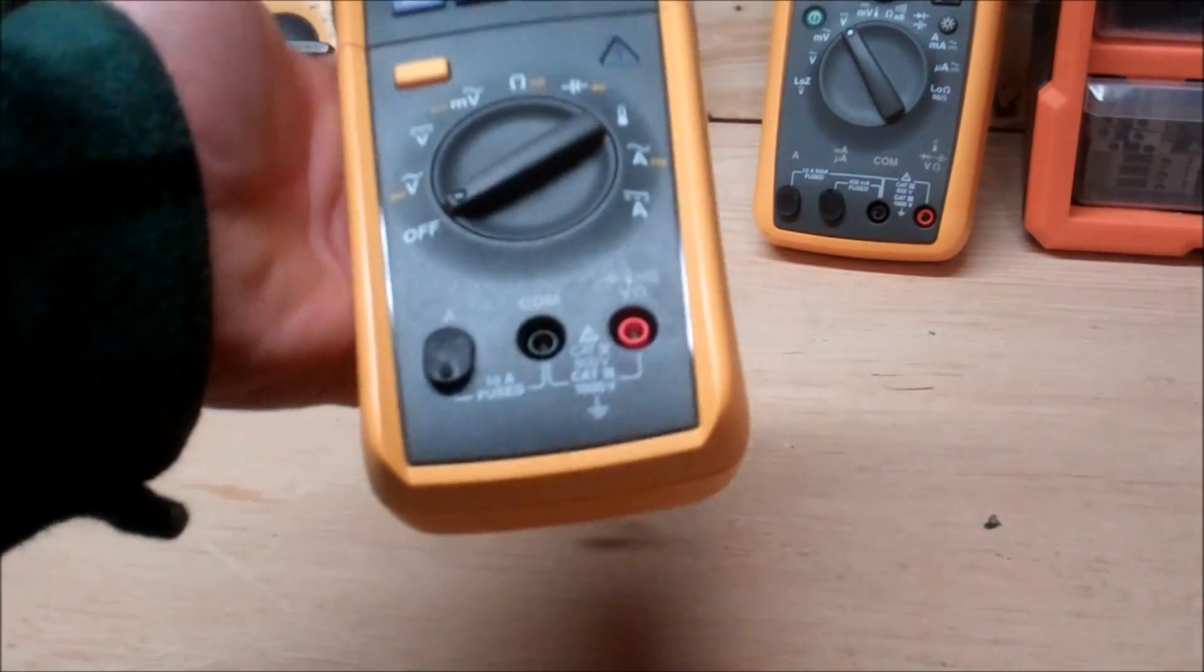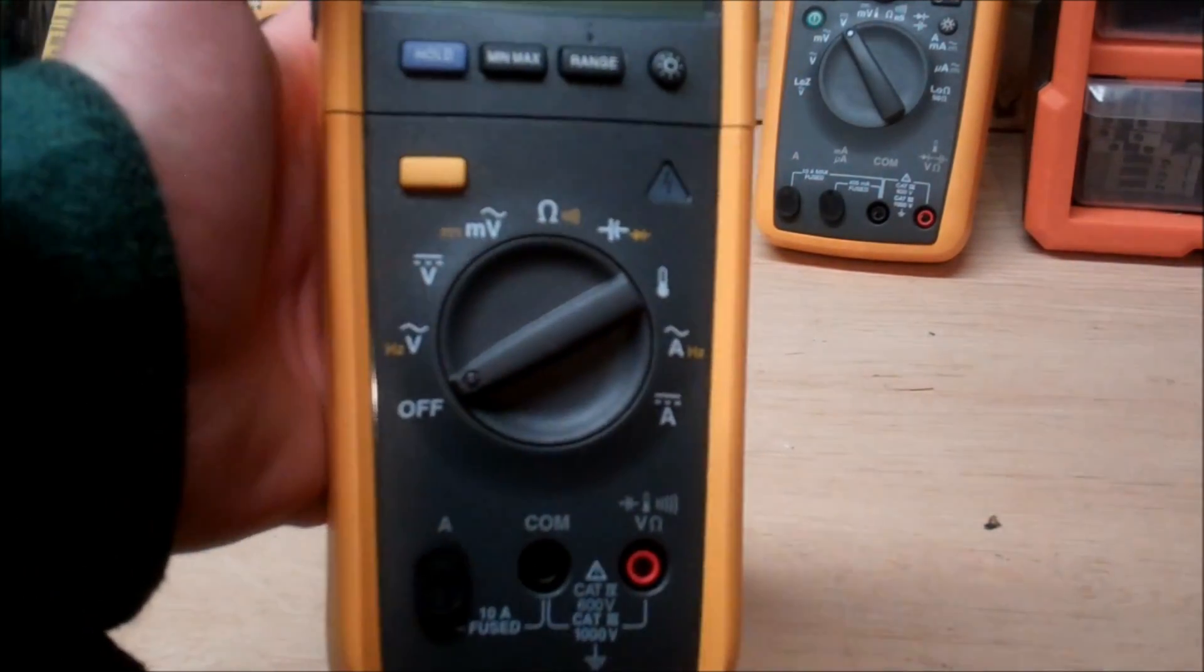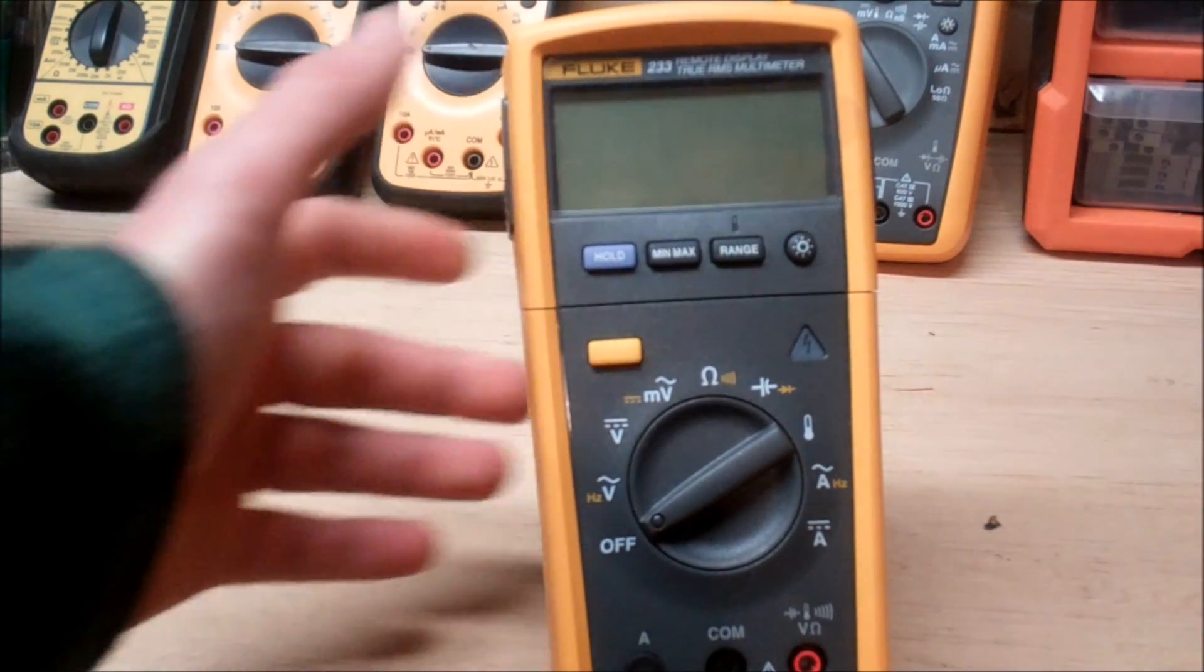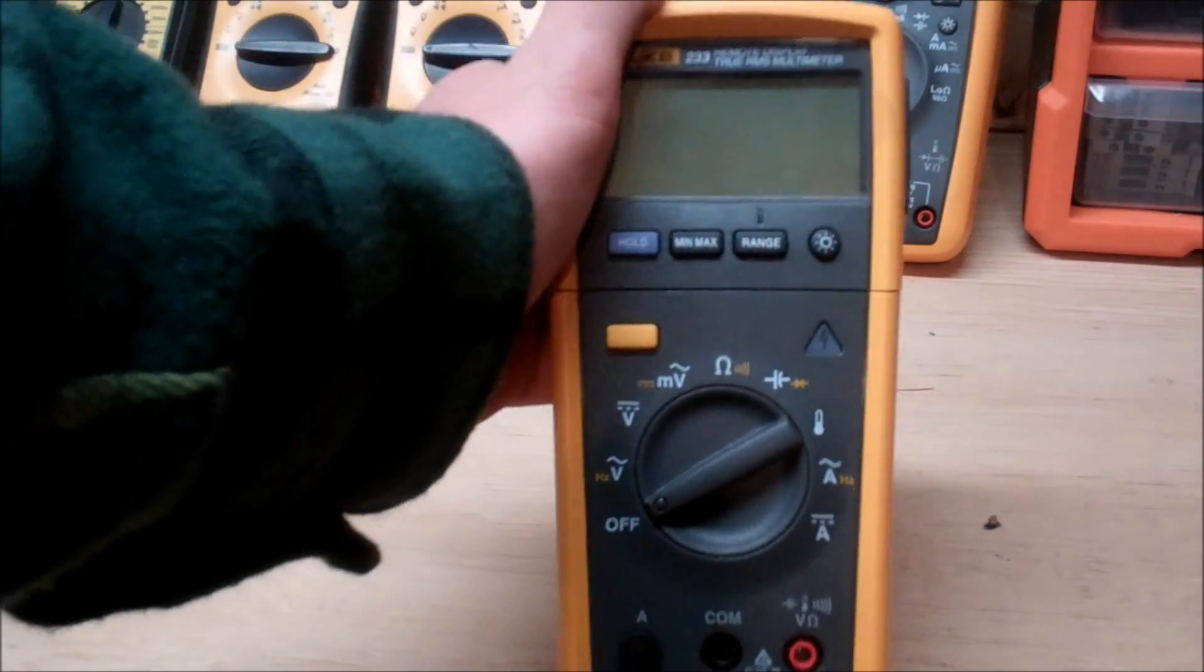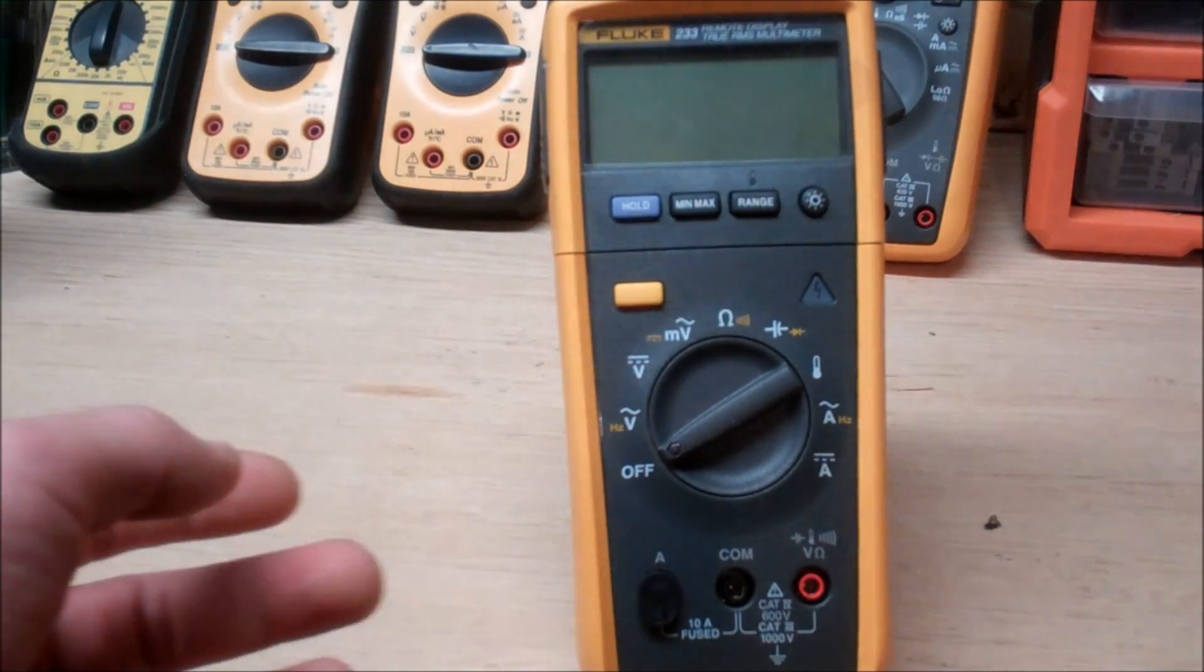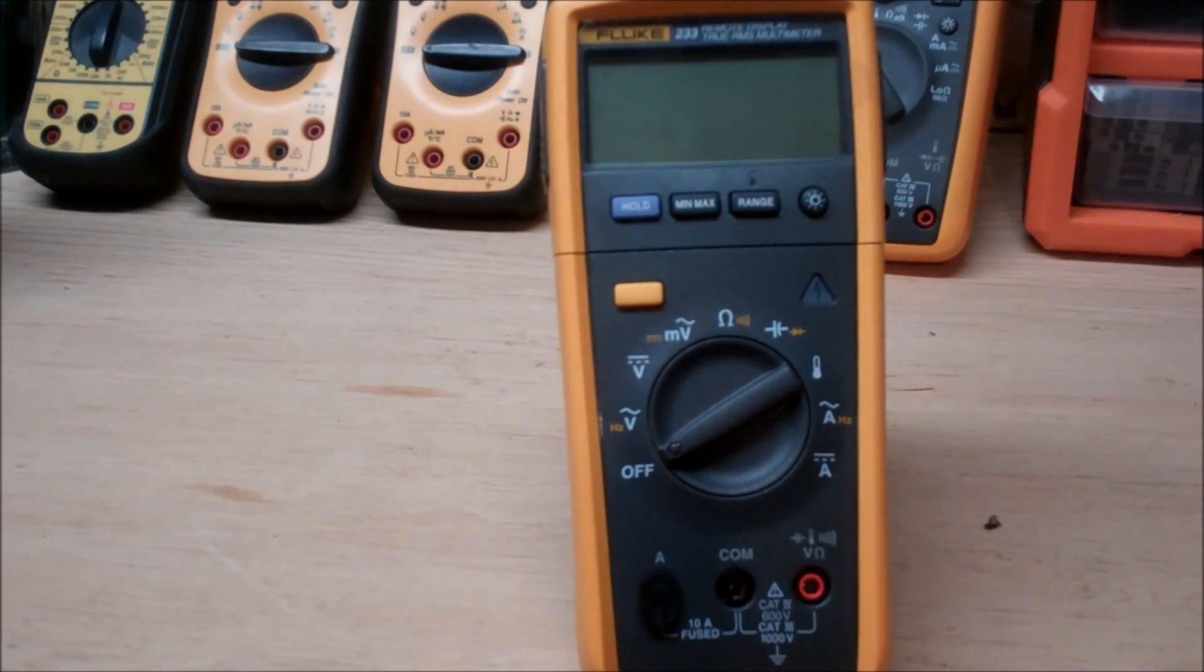Now of course Fluke always does a good job but there's one feature I really wish they incorporated onto this and that is the ability to measure duty cycle. With DC motor control being really apparent these days it would be a nice little integrated feature. And of course the other thing I didn't touch base on, it's a CAT IV under 600 volts and a CAT III 1000 volts.